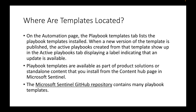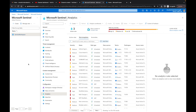On the Automation page, the Playbook Templates tab lists the playbook templates installed. When a new version of the template is published, the active playbook created from that template shows up in Active Playbooks. Playbook templates are available as part of the product solution or standalone content that you install from the Content Hub page in Microsoft Sentinel. The Microsoft Sentinel GitHub project also contains many playbook templates.